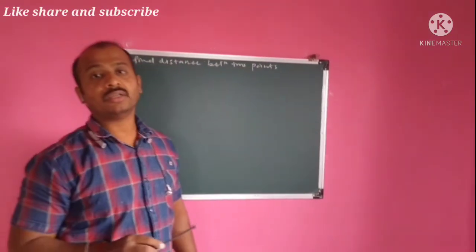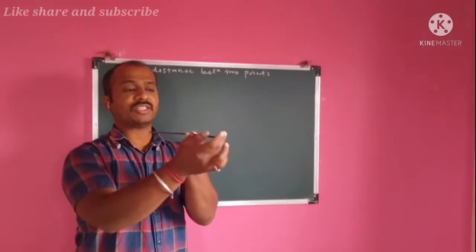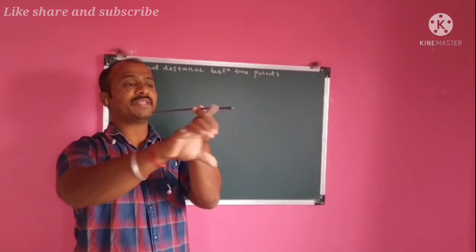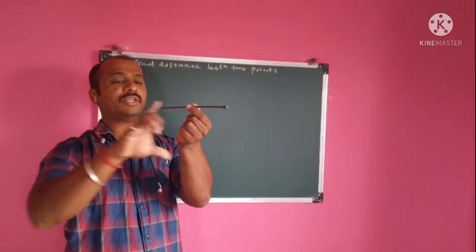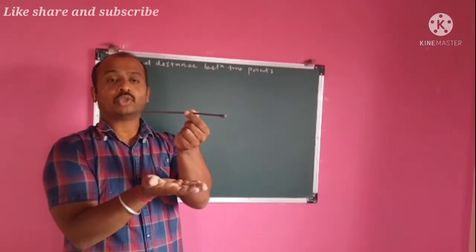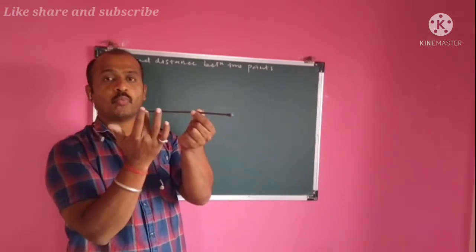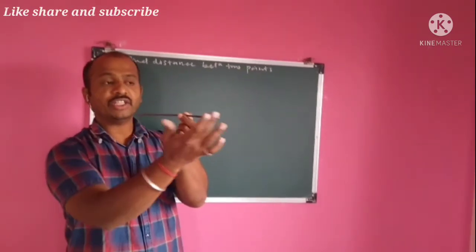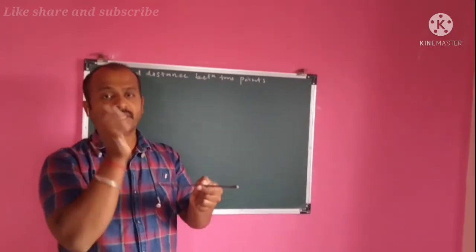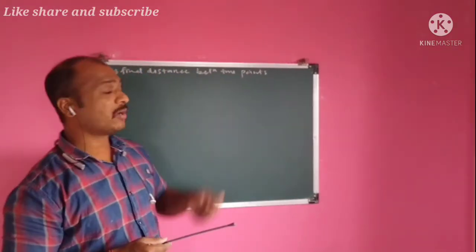If the line joining two points is parallel to the HP, the distance of both points from VP will be the same. In that case the true length appears in the top view. When the line joining the two points is parallel to the HP, the distance between the two points will appear in the top view.